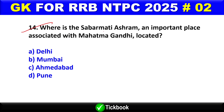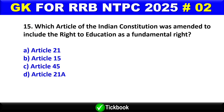Question number 14: Where is the Sabarmati Ashram, an important place associated with Mahatma Gandhi, located? Option C is the right answer — Ahmedabad.